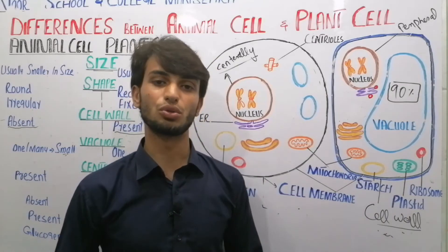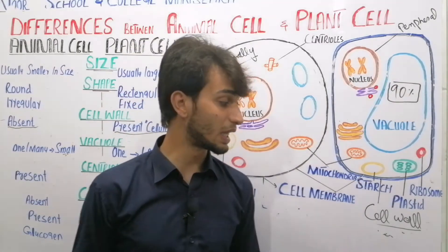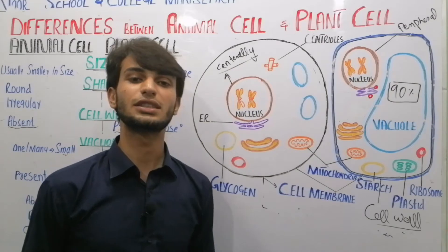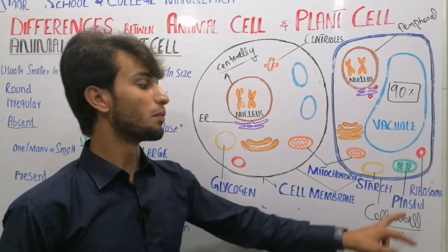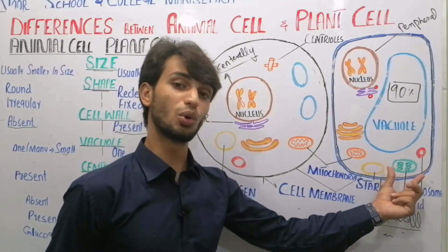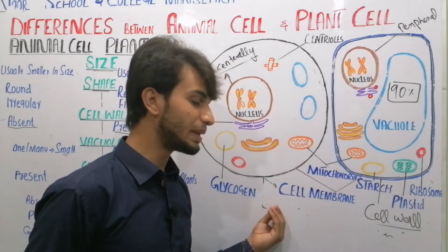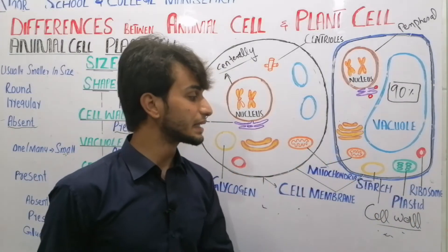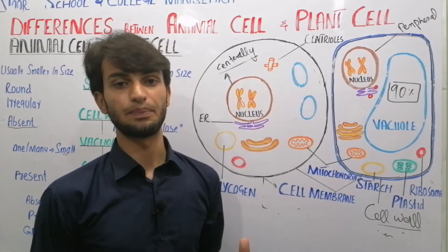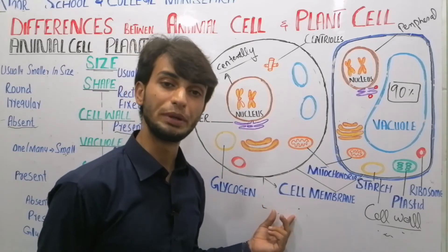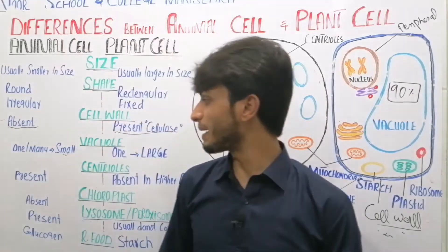Chloroplast is an organelle whose main function is photosynthesis. If we look at plant cells, plants mostly appear green to us, and the reason for that is plastids — specifically chloroplast, which is a type of plastid. Chloroplasts are present in plant cells but absent in animal cells. That is why plants can prepare their own food through photosynthesis, while animals cannot prepare food and must obtain it from plants.